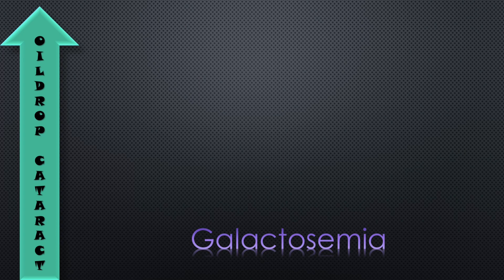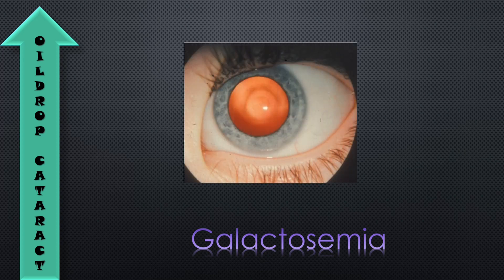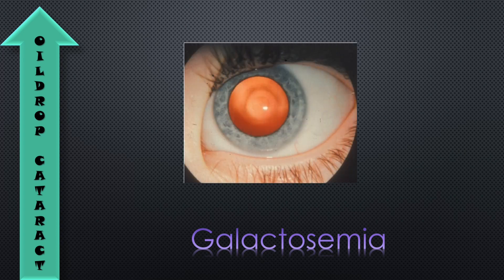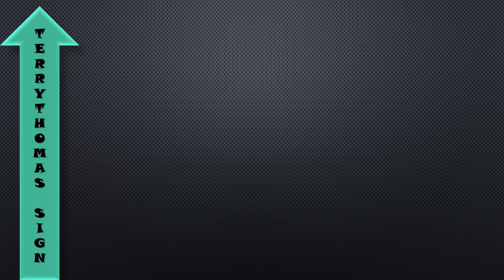The next one is oil drop cataract. Oil drop cataract is seen in galactosemia. Galactosemia is a multi-system disorder — an inborn error of galactose metabolism. Here we can see anterior and posterior lamellar opacities that look like an oil drop. That is the oil drop cataract of galactosemia.